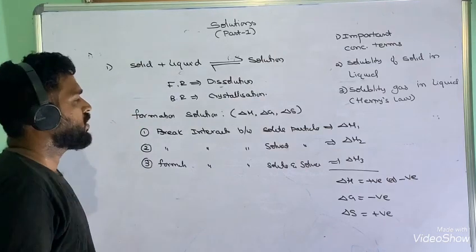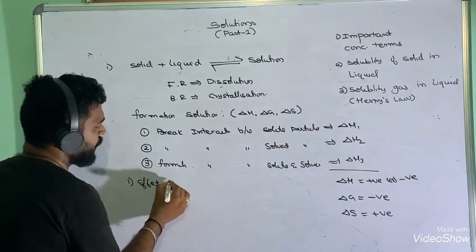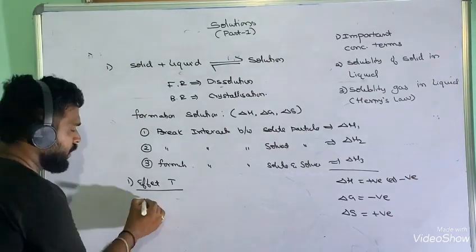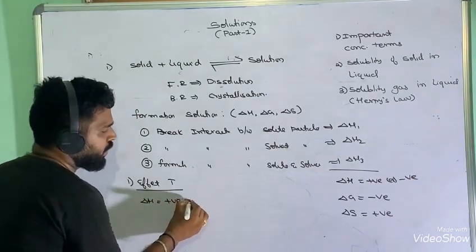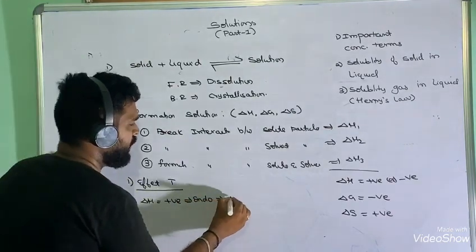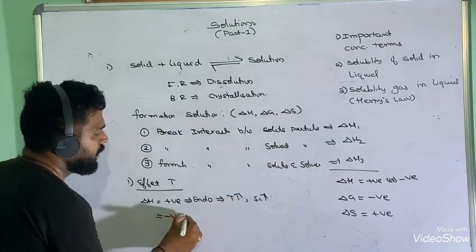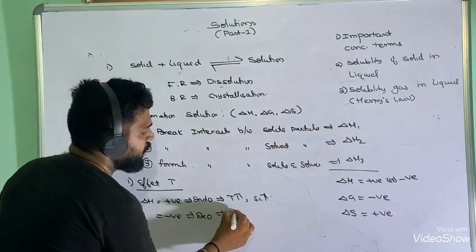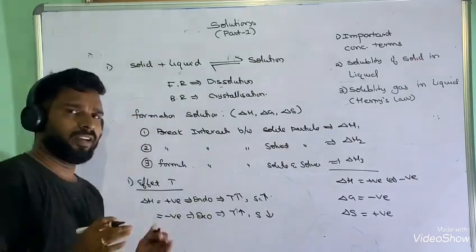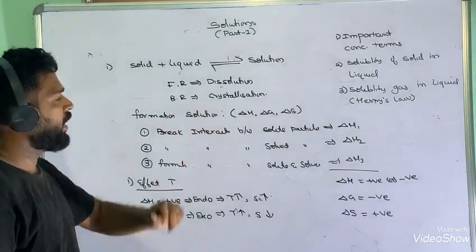Regarding the effect of temperature on solubility of solid in liquid: if ΔH is positive, the dissolution is endothermic, so increasing temperature increases solubility. If ΔH is negative, the dissolution is exothermic, so according to Le Chatelier's principle, increasing temperature decreases solubility.